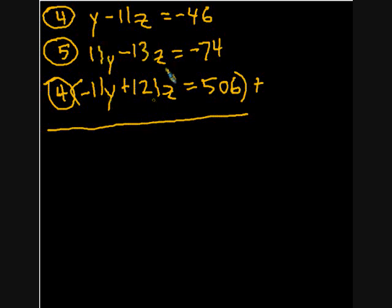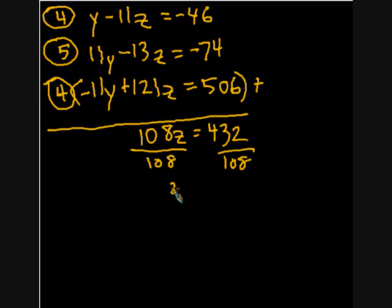So I'll add these two, and then these two, and then these two. So 11y plus negative 11y is 0. Negative 13z plus 121z is 108z. And then 506 plus negative 74 is 432. And then I will divide both sides by 108. Divide by 108. And when I do, I find out that z is equal to 4. And I'm going to circle that because that's not my final answer. I box my final answer, but this is just a preliminary, this is just an intermediate answer, z equals 4.